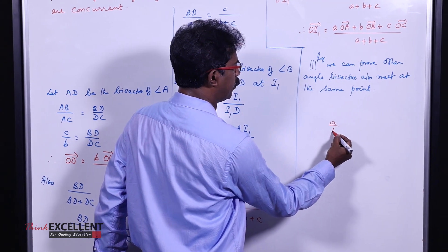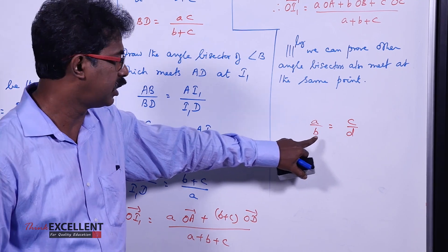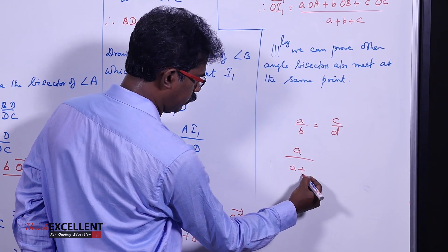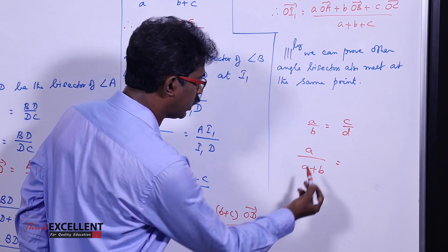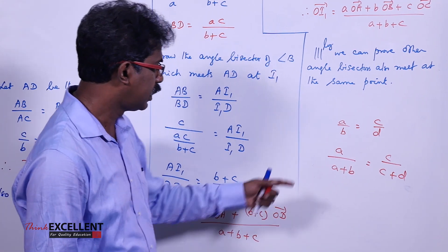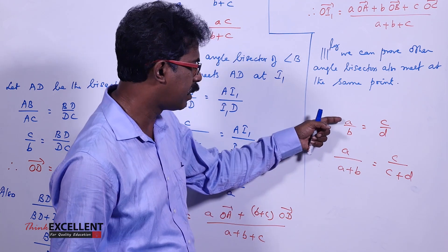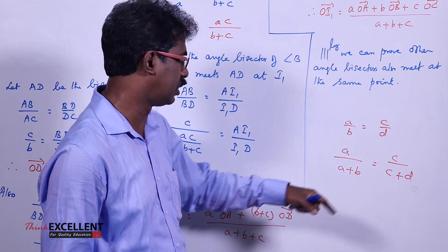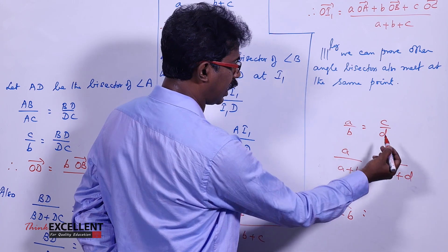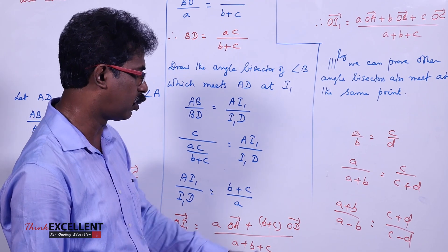You also need the componendo-dividendo rule. Suppose four numbers are in proportion: a by b equals c by d. Whatever change you give on the left side, you give the same on the right side. For example, a by (a plus b) equals c by (c plus d). Similarly, a by (a minus b) equals c by (c minus b), and (a plus b) by (a minus b) equals (c plus b) by (c minus b). We use this in our proof.